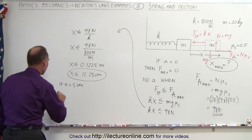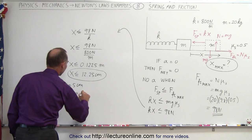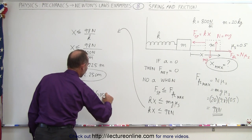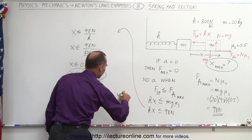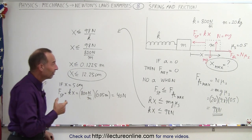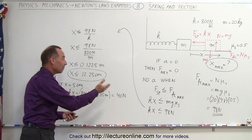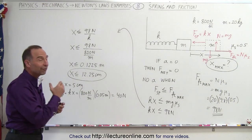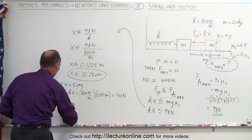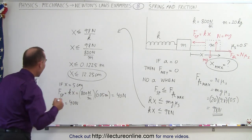For example, if x equals 5 centimeters, the force of the spring is kx = 800 N/m × 0.05 m = 40 newtons. Since the maximum friction force is 98 newtons, which is greater than 40 newtons, the block will not move. The friction force at that moment will also be 40 newtons, because it simply matches the spring force.